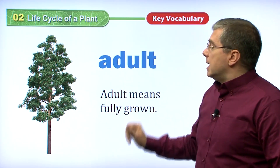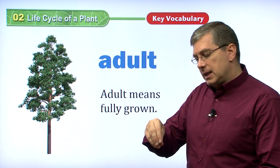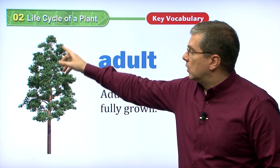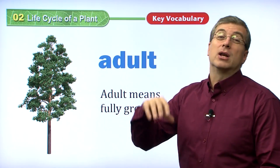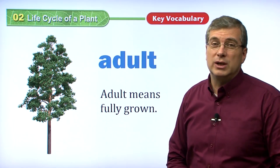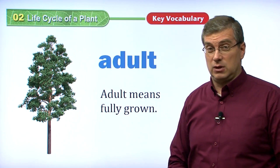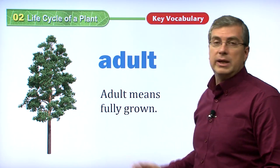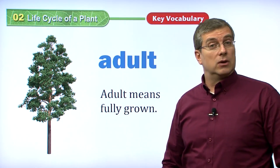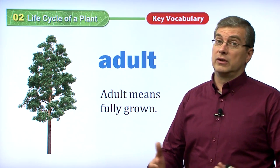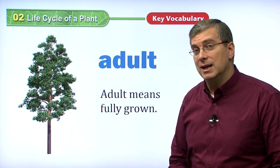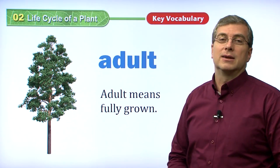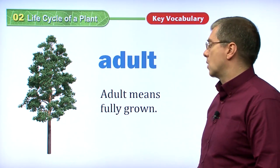An adult. We've talked about the seed, we've talked about the seedling, and after a long time we have an adult. A tree takes a very, very long time to grow — some trees are hundreds of years old. An adult means fully grown. If it's an adult plant, an adult dog, or an adult human being, it means it is fully grown. It's in the final stage of growth.